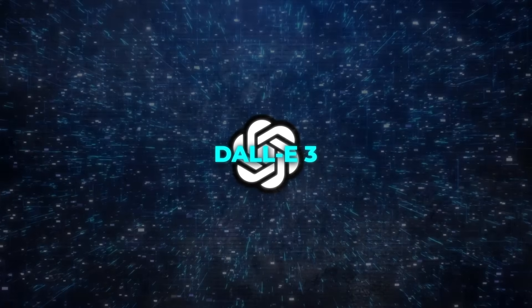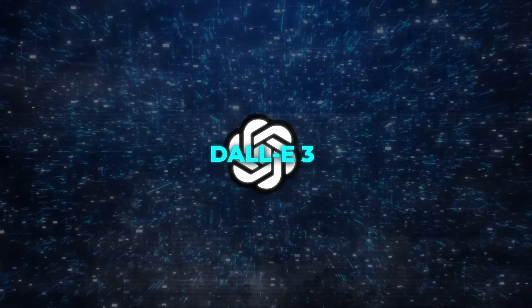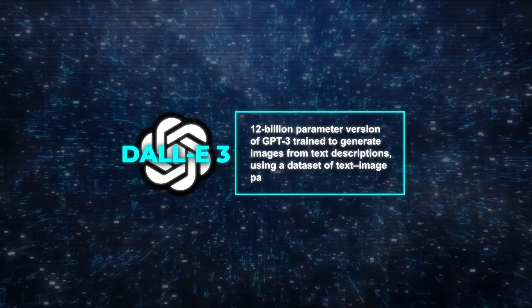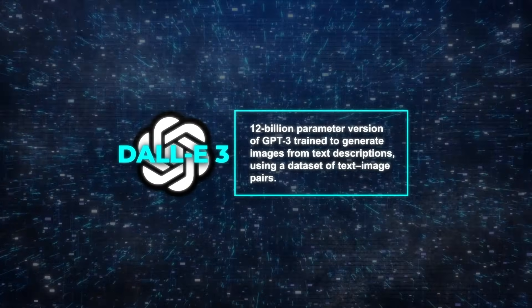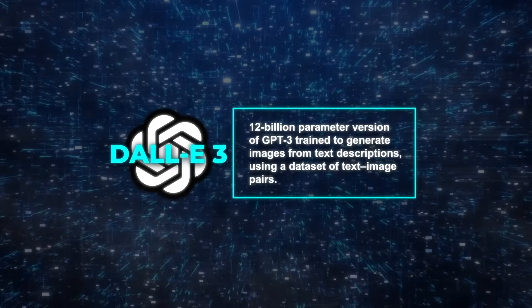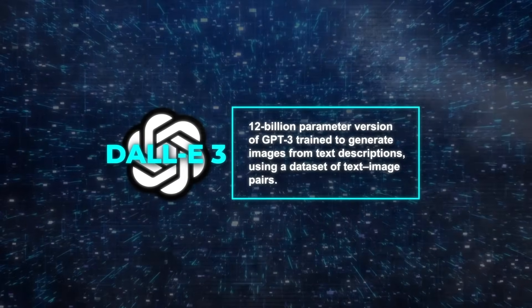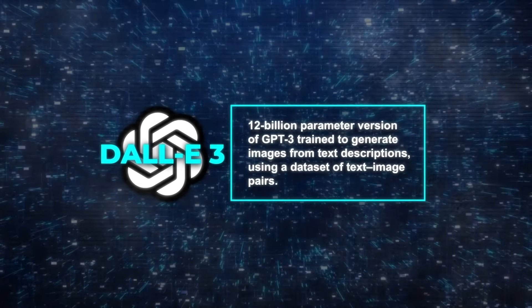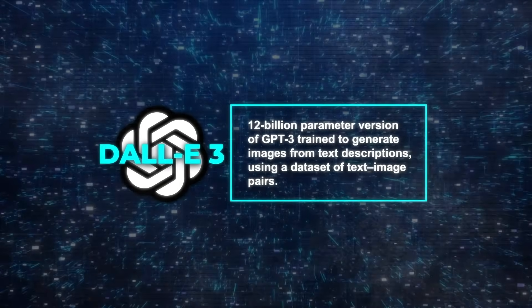What is DALL-E3, and how does it work? DALL-E3 is a 12-billion-parameter version of GPT-3 trained to generate images from text descriptions using a dataset of text-image pairs.